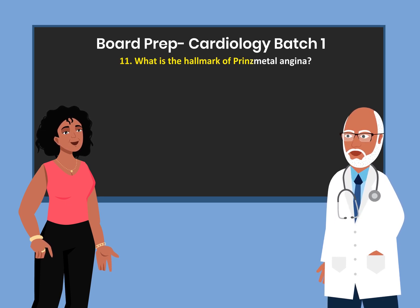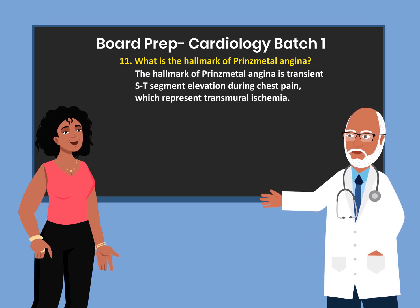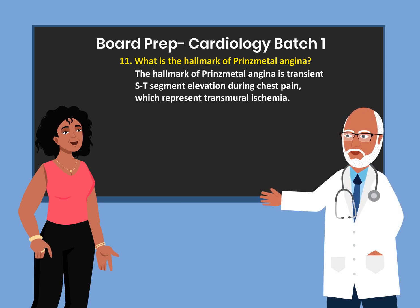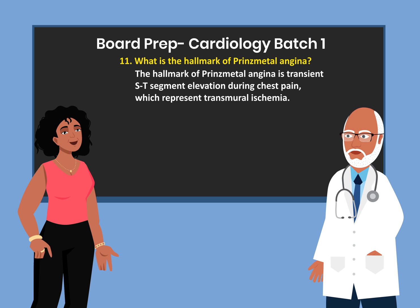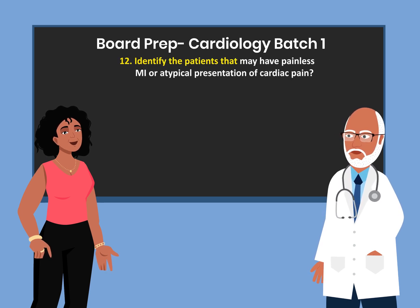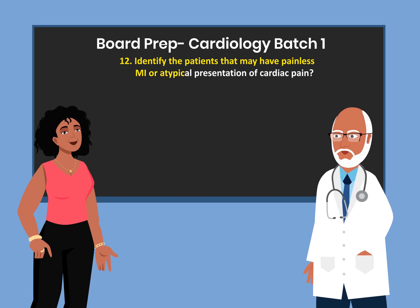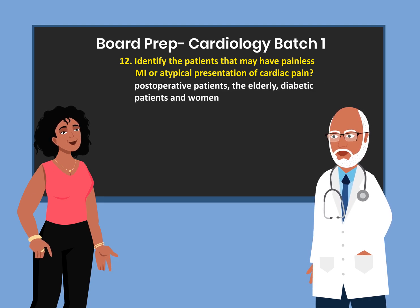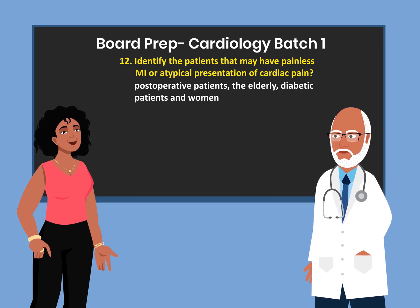What is the hallmark of Prinzmetal angina? The hallmark of Prinzmetal angina is transient ST-segment elevation during chest pain, which represents transmural ischemia. Identify the patients that may have painless MI or atypical presentation of cardiac pain: post-operative patients, the elderly, diabetic patients, and women.